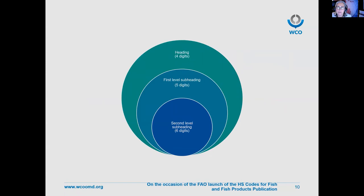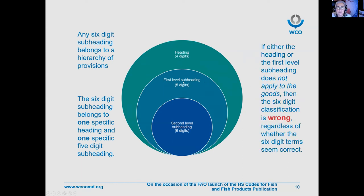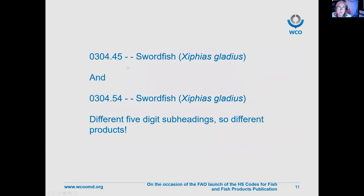The biggest takeaway is that you cannot start classification from the bottom up. Any six-digit subheading belongs to a hierarchy of provisions — one specific five-digit first-level subheading and one specific heading. If either the heading or the first-level subheading does not apply to the goods, then the six-digit classification is wrong, regardless of whether the six-digit terms seem correct. For example, two six-digit subheadings can have exactly the same terms but refer to different products — you must know to which five-digit subheadings they belong before finding the correct one.